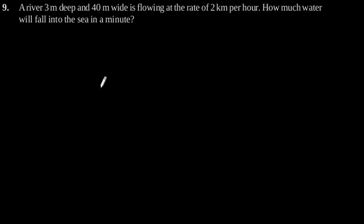Exercise 13.5 Question number 9. A river 3 meter deep and 40 meter wide is flowing at the rate of 2 km per hour. How much water will fall into the sea in a minute?